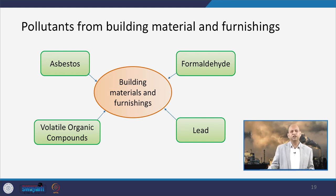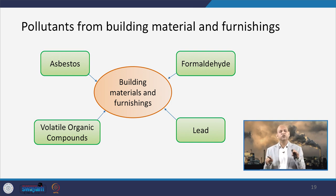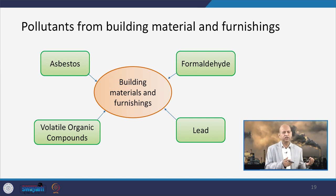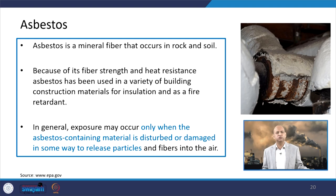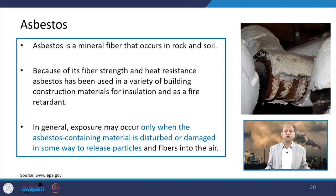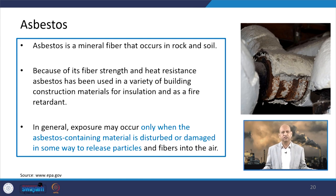Pollutants from building materials and furnishings include asbestos, formaldehyde, volatile organic compounds, and lead. Asbestos consists of mineral fibers that occur naturally in rocks and soil, and where asbestos-containing sheets are present in buildings, these fibers can be emitted into the air.